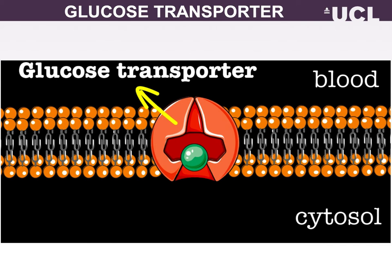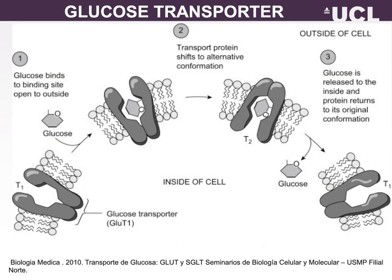GLUTs are but one example in a superfamily of transport facilitators. Glucose transporters are integral membrane proteins whose membrane-spanning region is composed of 12 alpha helices. Glucose transporters function through a typical membrane transport mechanism: glucose binds to the outer membrane surface causing a conformational change associated with transport across the membrane, and at the inner side, glucose is then released into the internal aqueous solution.